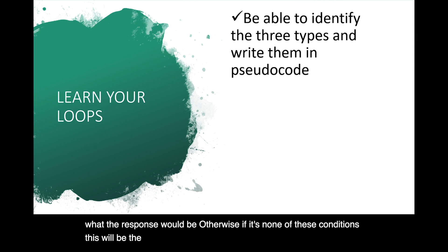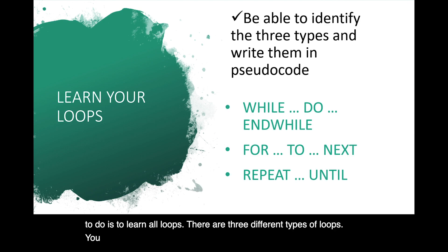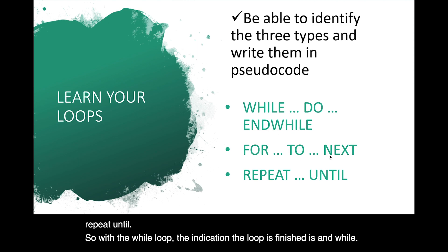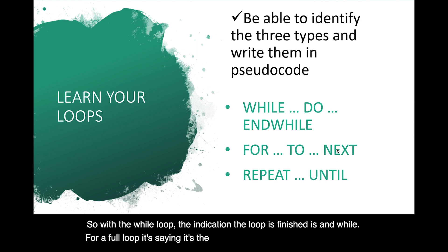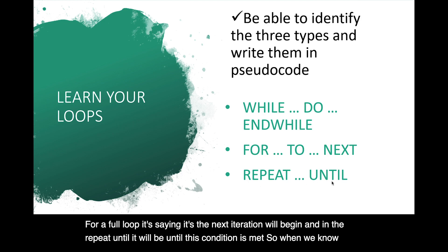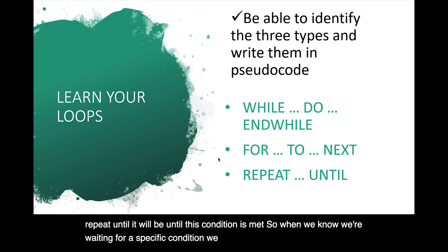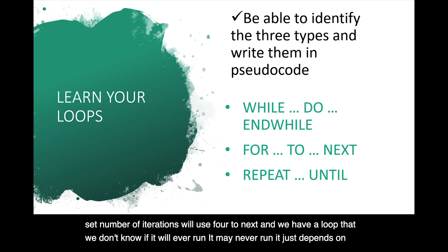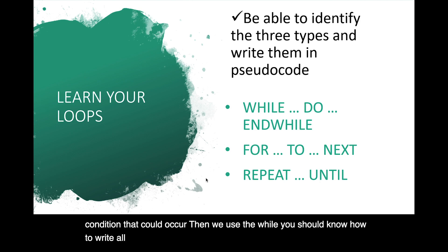And so the last thing that we need to do is to learn our loops. There are three different types of loops that you should know. The while, do, end while, the for, to, and next, and the repeat until. With the while loop, the indication the loop has finished is end while. For a for loop, it's saying it's the next iteration will begin. And in the repeat until, it will be until this condition is met. When we know we're waiting for a specific condition, we use the repeat until. When we have a set number of iterations, we use for, to, next. And when we have a loop that we don't know if it will ever run, it may never run, it just depends on a condition that could occur, then we use the while. You should know how to write all three of these in pseudocode and also be able to explain why you would choose that loop over another loop.